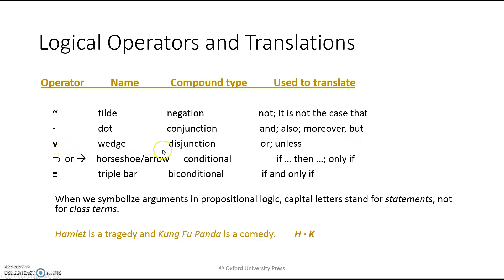The wedge is the symbol for a disjunction — that's an 'or' sentence. It can stand for 'or,' and a synonym is 'unless.' Unless means the same as 'or.' The horseshoe, or arrow sign, symbolizes a conditional relationship — an if-then or only-if relationship. The triple bar, or a double-headed arrow, is the biconditional sign; it symbolizes 'if and only if.'